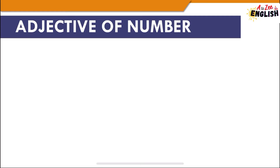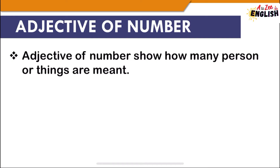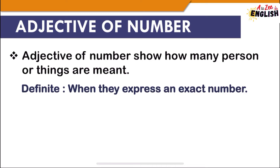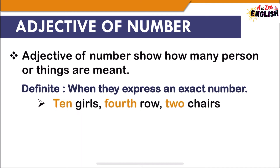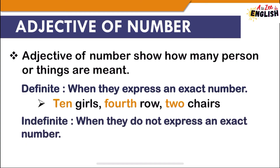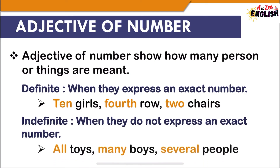Next is adjective of number, which shows how many persons or things are meant. This adjective represents a numerical value. It is further categorized into two types. The first is definite, when they express an exact number — such as 10 girls, fourth row, two chairs. The second is indefinite, when they do not express an exact number — for example, all, twice, many books, several people.